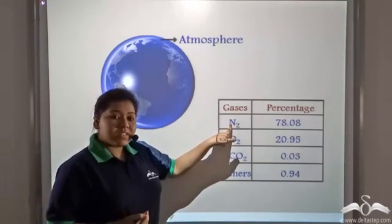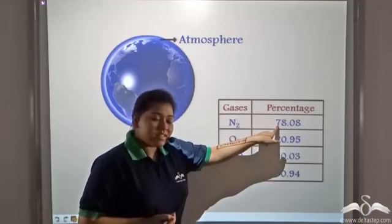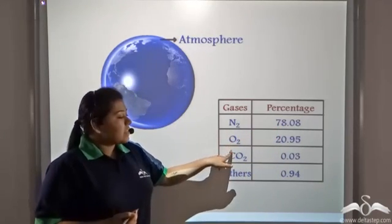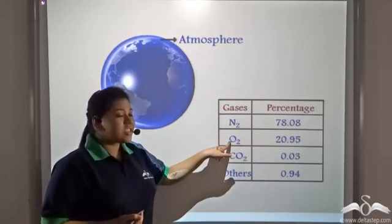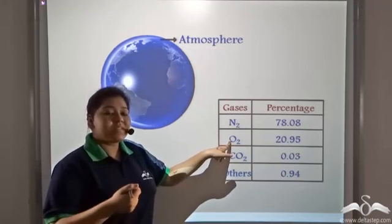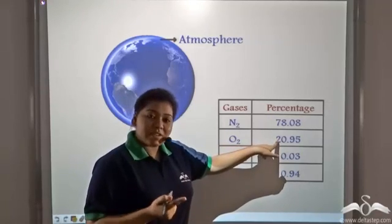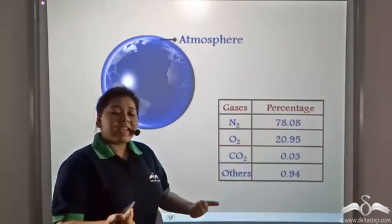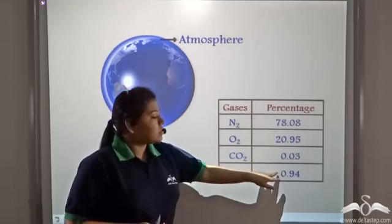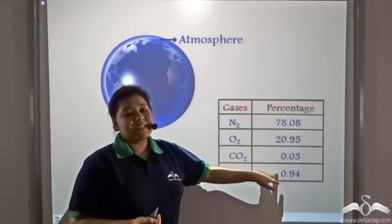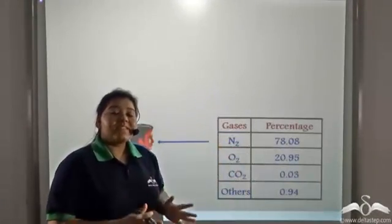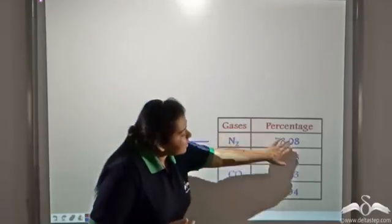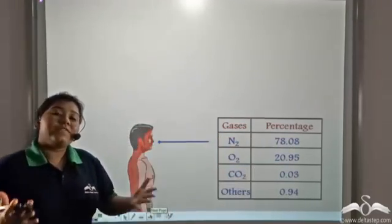Like nitrogen has a percentage of 78%. Carbon dioxide has a percentage of 0.03%. Oxygen is approximately about 21% in the atmosphere and the other gases together form about 0.94% percentage in the air. This is the air that we are breathing in, the percentage of the various gases present in the air that we breathe in.